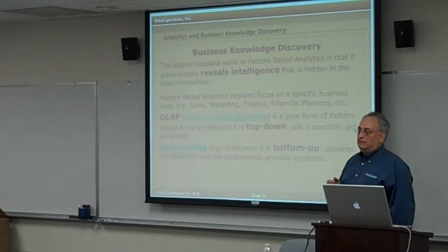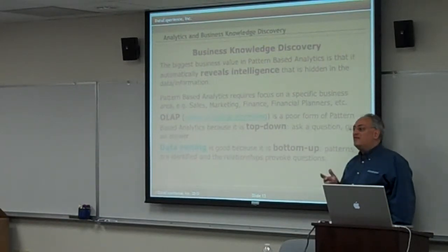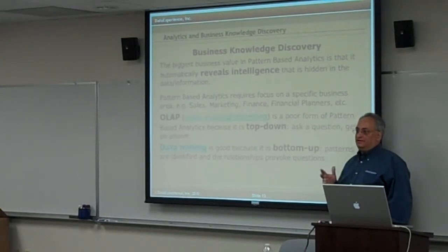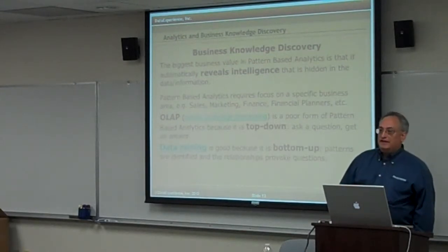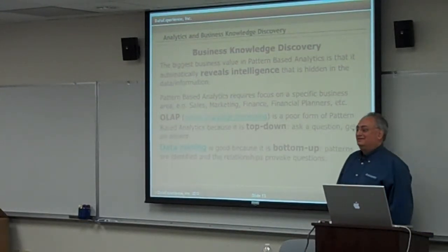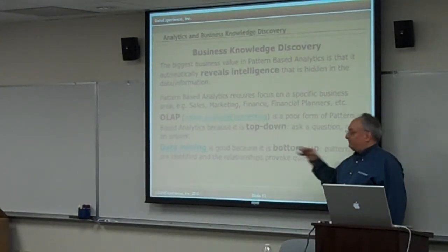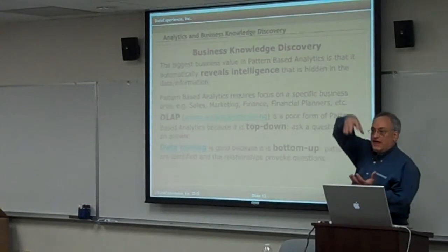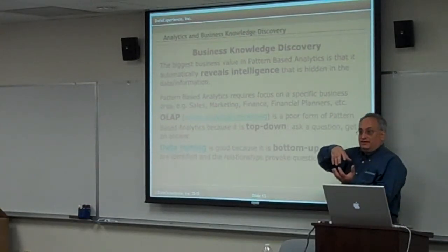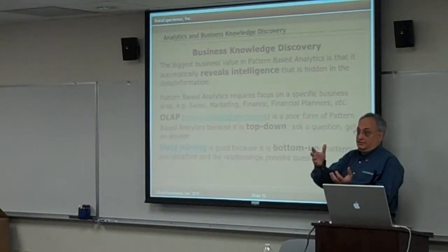Give me 10% of the data, yet have it represent all the characteristics of the rest of the data. Give me only 10,000 records out of 20 million that represent the entire data set. How do you do that? There are techniques to do that, but that's an architecture-side thing.